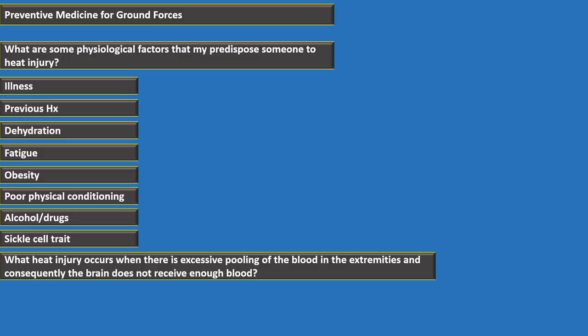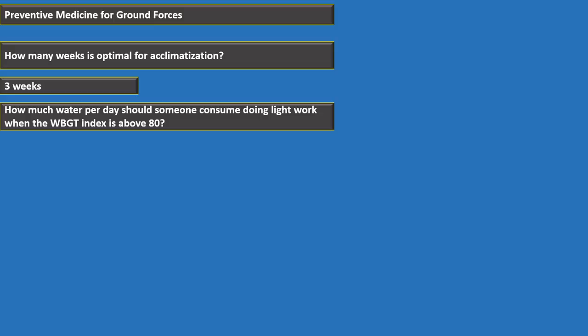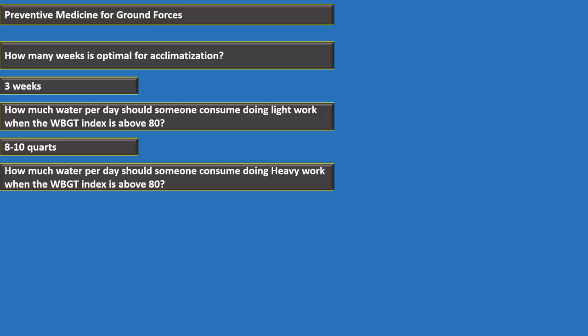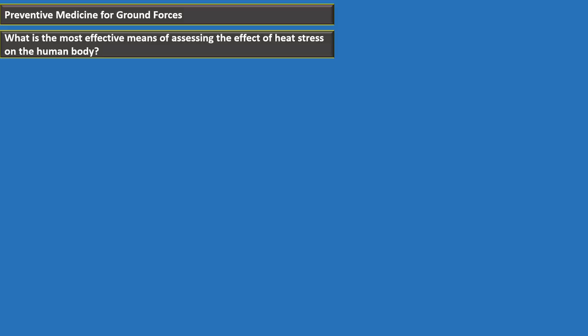Three weeks is optimal for acclimatization. For light work with WBGT above 80 degrees, consume 8 to 10 quarts of water per day. For heavy work with WBGT above 80 degrees, consume 13 to 19 quarts per day. The optimum temperature for drinking water is 50 to 60 degrees Fahrenheit. The most effective means of assessing heat stress on the human body is the WBGT index.